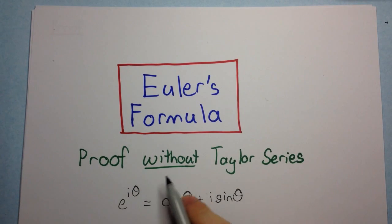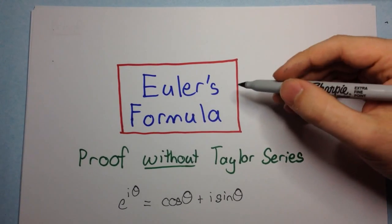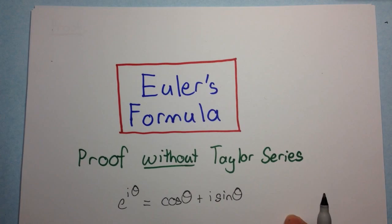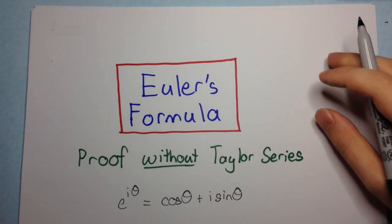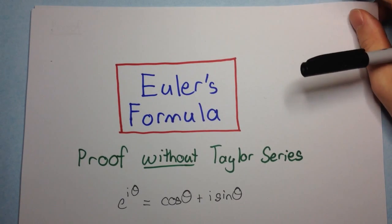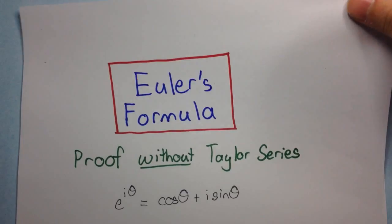And today we're going to be seeing a proof without the use of Taylor series. Now when Leonard Euler first discovered this nice theorem, this nice formula, he actually used Taylor series which you probably don't know much about or anything about at the moment. So I'll just show you a proof without the use of Taylor series.